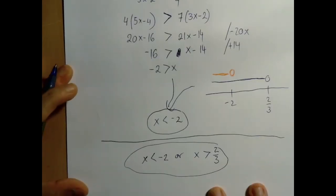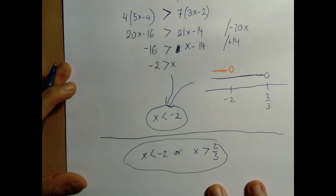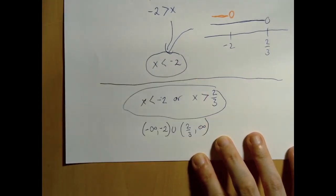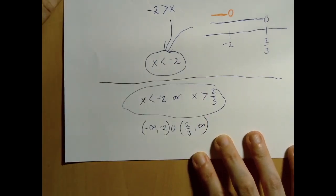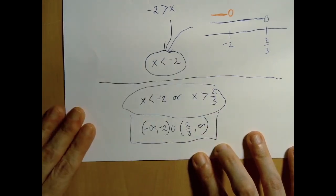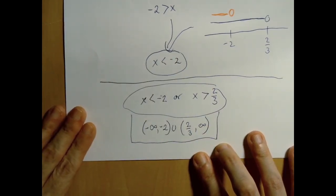So the final answer is x is either less than negative 2 or greater than 2 thirds. And the same solution set in interval notation would be the union of the two intervals from negative infinity to negative 2 and from 2 thirds to infinity. Thank you for watching.